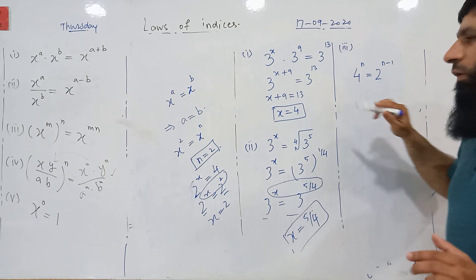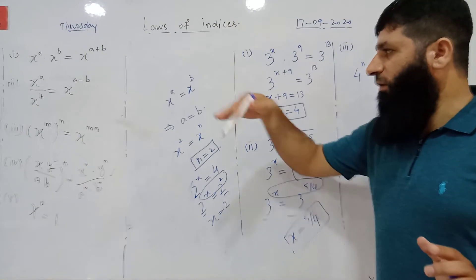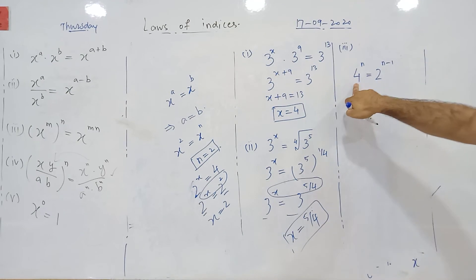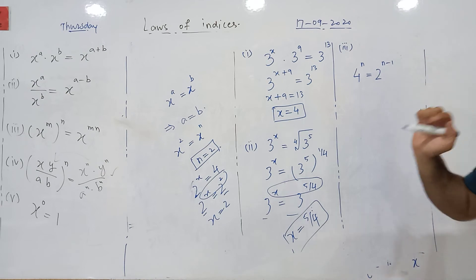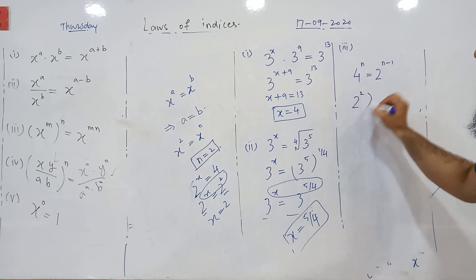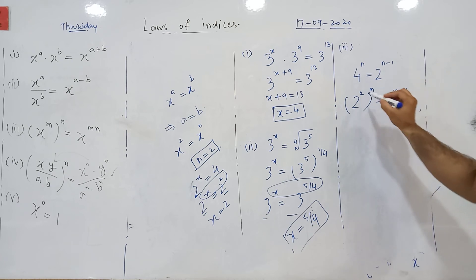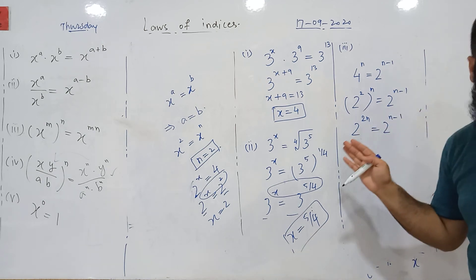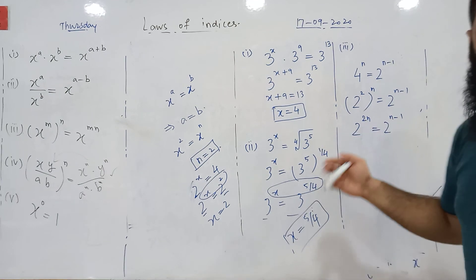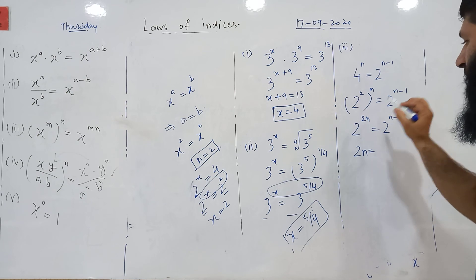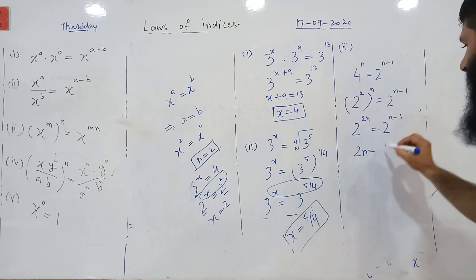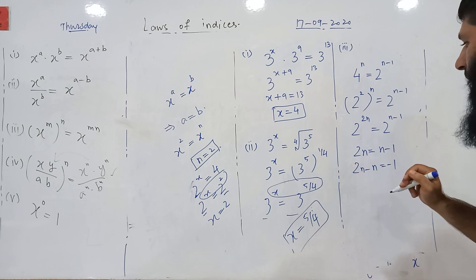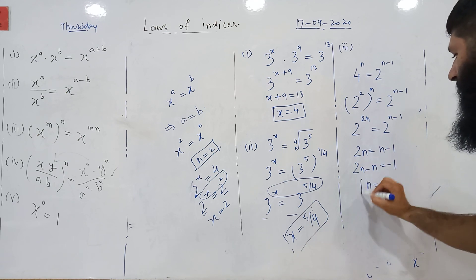Look at this equation where we need to find the value of n. To use the equal-bases rule, we need to make both bases equal. The base 4 can be written as 2 squared. Multiplying, we get 2 raised to power 2n on the left hand side. Now both bases are equal to 2, so we equate the indices: 2n equals n minus 1. Solving, n comes to the left hand side and becomes negative, giving n equal to minus 1.